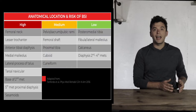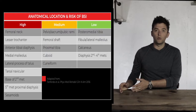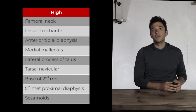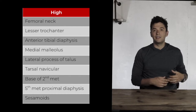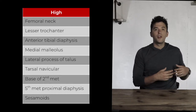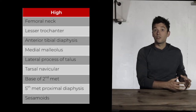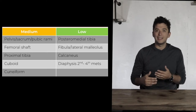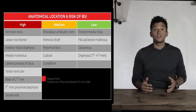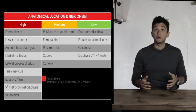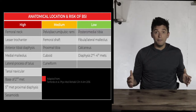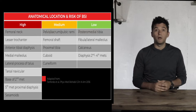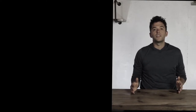Bone stress injuries are classified into three categories: high risk, medium risk, and low risk. High-risk injuries are more likely to develop complications, less likely to heal, and more likely to require surgery. Knowing and understanding which bones are high-risk sites is critically important — we definitely don't want to miss a bone stress injury at a high-risk site.